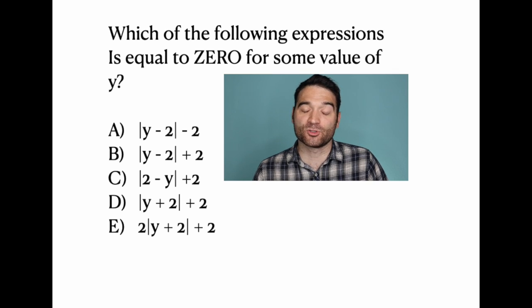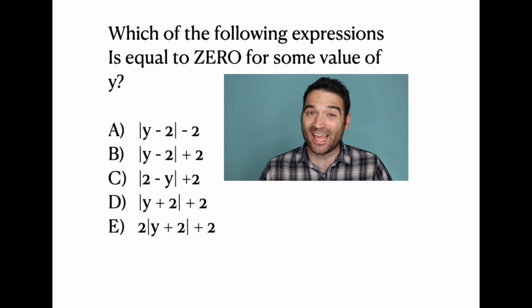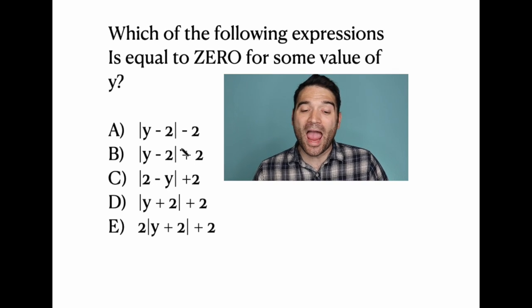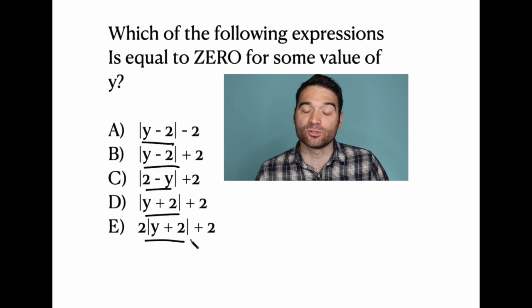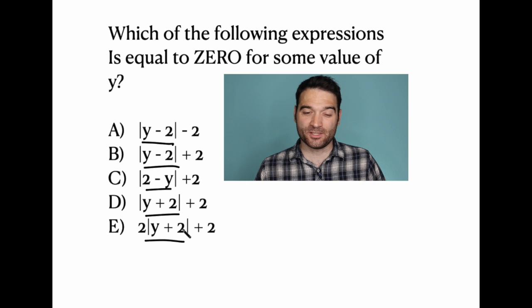So if it were the absolute value of zero, then it would be zero, but it certainly cannot be a negative number. So at a minimum, this part of each expression, the absolute value part, at a very minimum is zero.